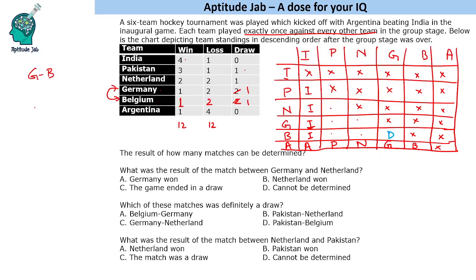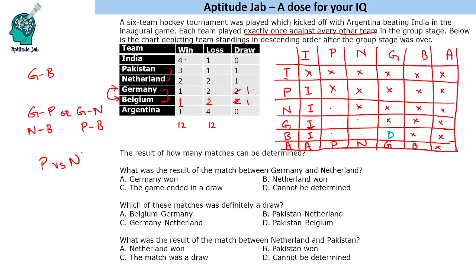The possibilities are: Germany-Pakistan draw with Netherland-Belgium draw, or Germany-Netherland draw with Pakistan-Belgium draw. One of these pairs is correct. Now Pakistan versus Netherland cannot be a draw, because if it were, those two teams would need another draw match among the remaining teams, which is not possible. So either Pakistan or Netherland is the winner in their head-to-head match.